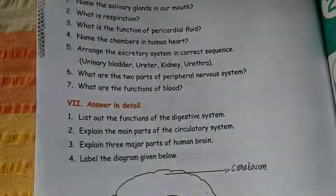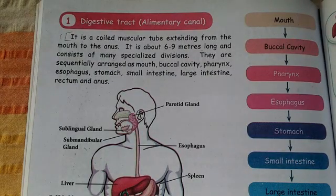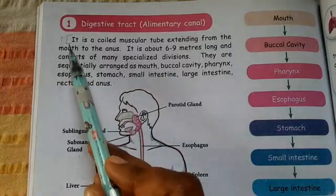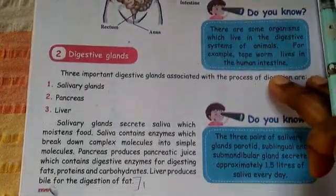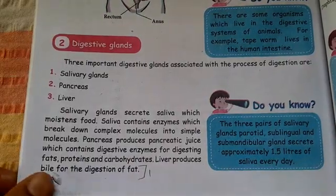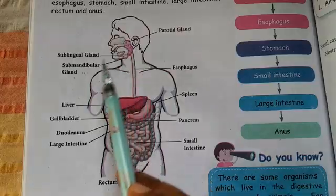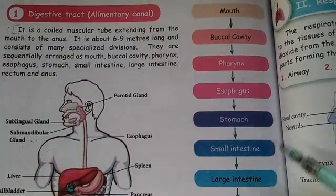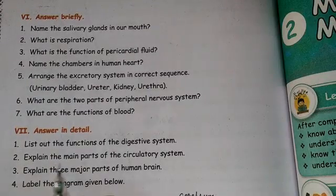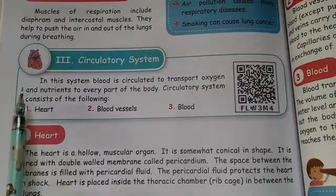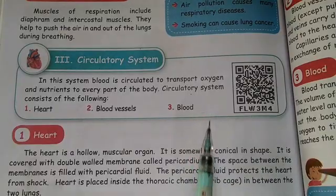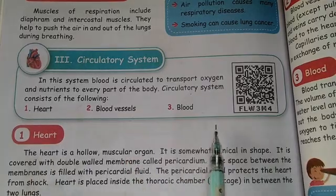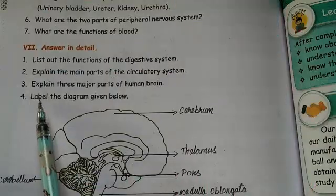Answer in detail: list out the functions of the digestive system. This is a detailed answer — you have to cover at least one or two pages. You must cover the digestive tract and alimentary canal, draw the diagram, and include the protocol. Second detailed question: explain the main parts of the circulatory system. You have to explain the heart, blood vessels, and blood — draw the diagrams in detail.